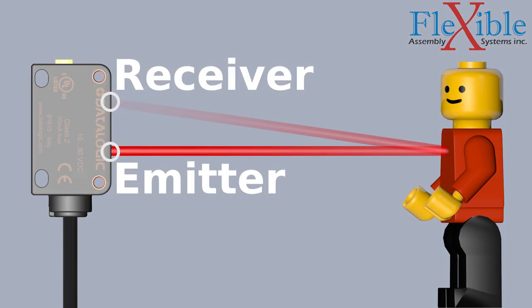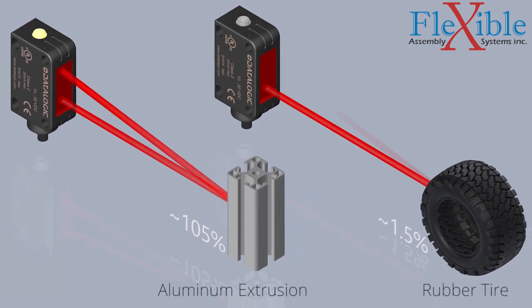Unfortunately, not all targets are great reflectors, so only a small amount of the emitted light will make it back to the receiver. This results in a variable detection range. A rubber tire with a reflective index of about 1.5% will need to be closer than aluminum extrusion with a reflective index of 105% to be seen.